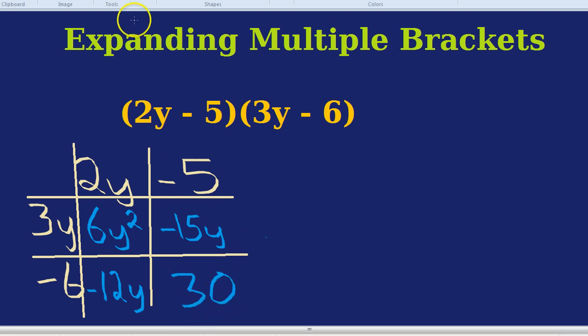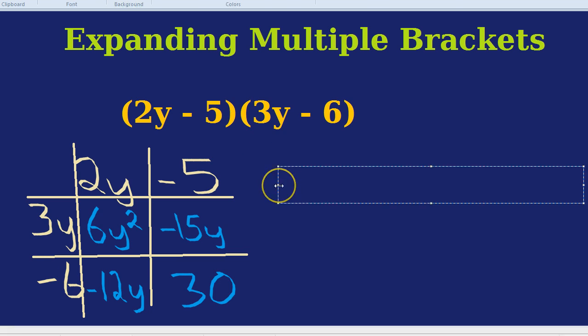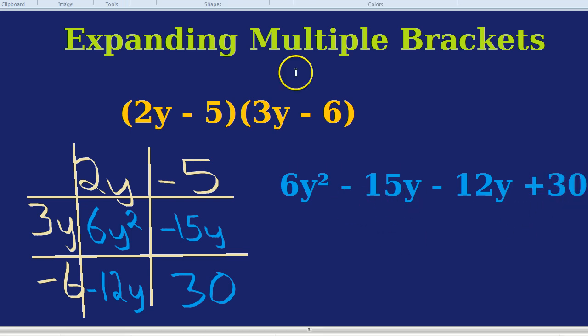And when we write this, we have to remember to collect like terms, so we don't just simply leave our answers, 6y squared, take away 15y, take away 12y, add 30, we need to collect together, and it's always the two middle terms actually, we need to collect together the minus 15y and the minus 12y. Just as we did before, I would recommend circling them, so we remember to include the symbol in front, it's negative 15y, negative 12y.